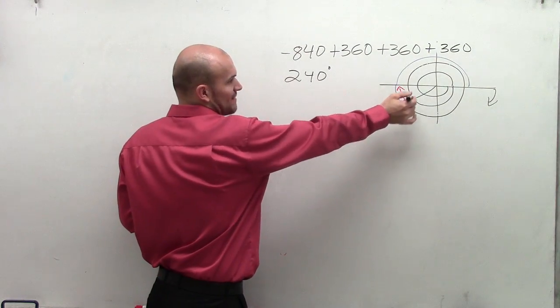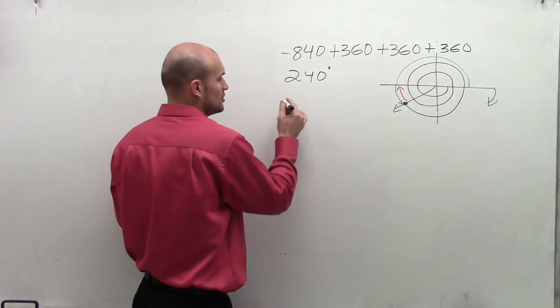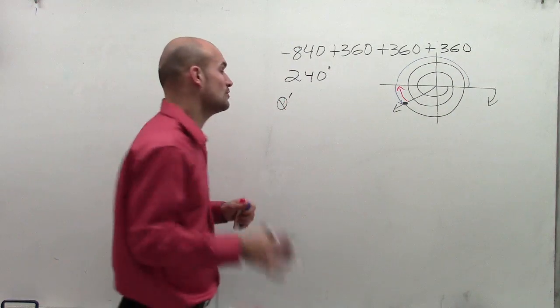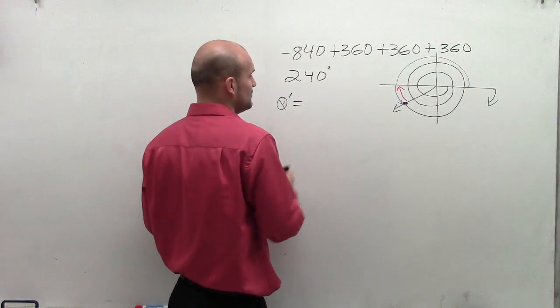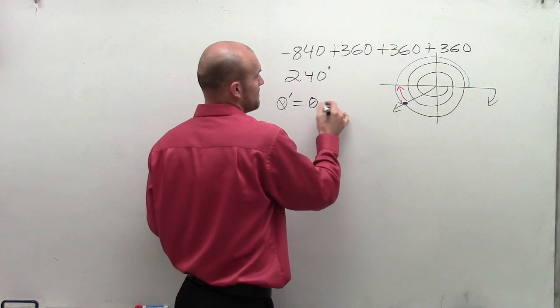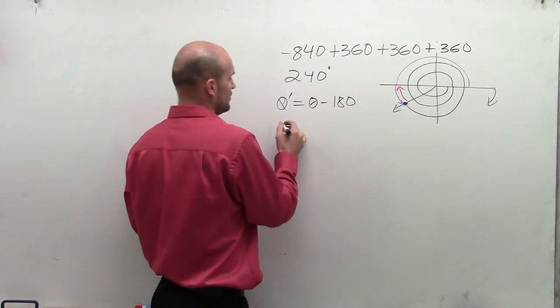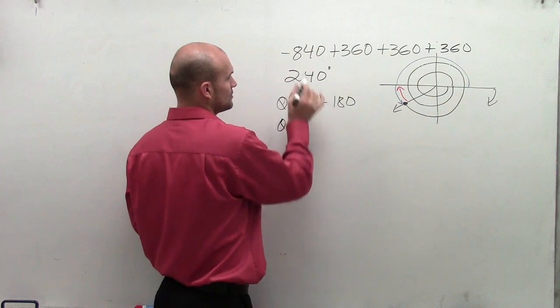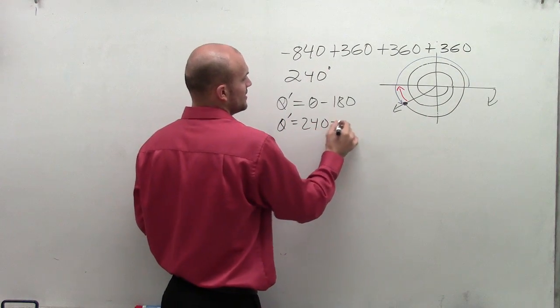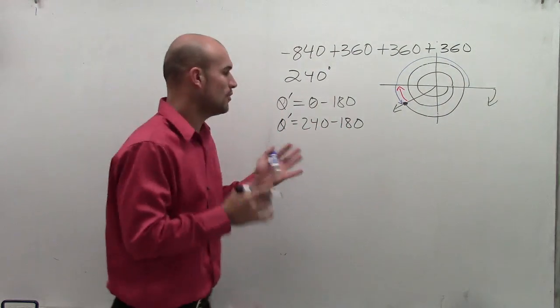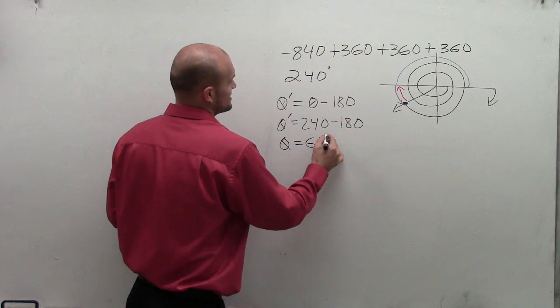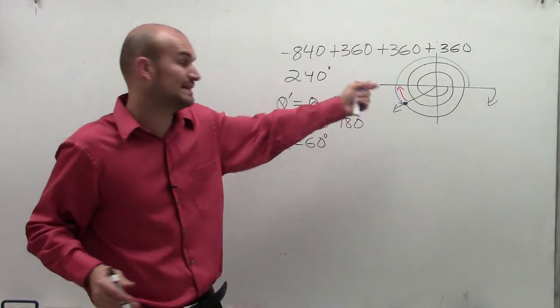The formula, since we have our terminal side of our angles in the third quadrant, the formula for finding the angle in the third quadrant is theta prime equals theta minus 180. Well, therefore, theta prime equals our theta, which is 240 minus 180. So it's important for us to be able to understand that in this case we get 60 degrees, which we were able to reason with this.